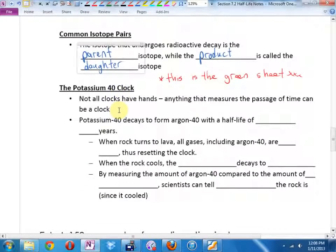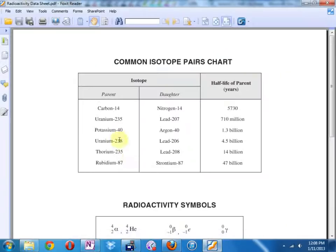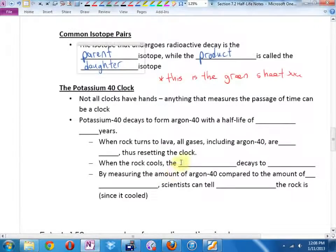So, if you get into geology, you'll learn about the potassium-40 clock. Potassium-40 decays. So, not all clocks have hands. Anything that can measure the passage of time can be a clock. Potassium-40 decays to form argon-40. And argon-40 has a half-life of... 1.3 billion years. Sorry, potassium-40 has a half-life of 1.3 billion years.